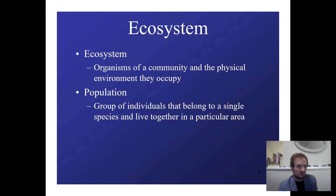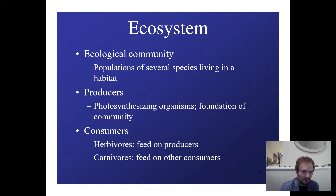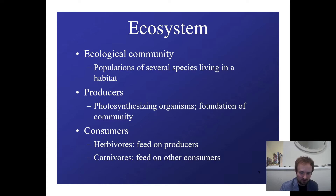An ecosystem is the organisms of a community in the physical environment they occupy. A population is a group of individuals within that ecosystem, usually limited to one particular area. An ecological community has several populations of species living in a similar habitat. In these communities you usually have two types of organisms: producers and consumers. Producers are things that photosynthesize — they're the foundation of all food chains. Consumers feed on producers. Herbivores feed on producers, and carnivores feed on other consumers. Humans fit right there in the middle — we just eat everything.